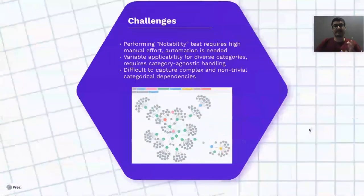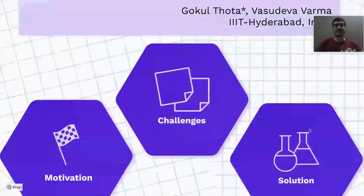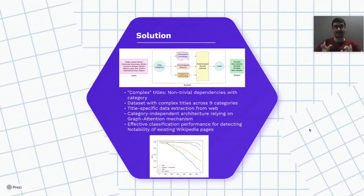Let's look at how we define a solution to solve this problem. We first define the notion of something called complex titles, that is titles having non-trivial dependencies with the particular category. We curate a dataset by selectively picking nine categories. For any given title for each of these categories, we perform title-specific data extraction from the web and we employ a category agnostic architecture which uses the graph attention mechanism for generating document encoding for classification.